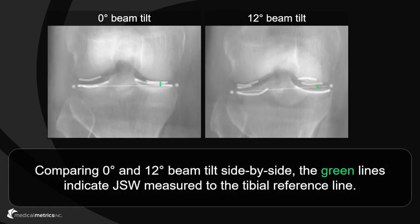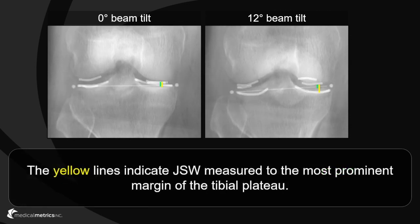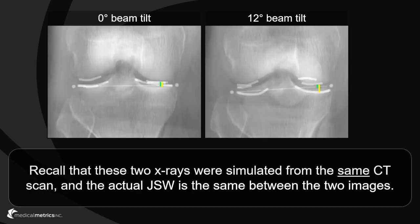Comparing radiographs at 0 degrees and 12 degrees of vertical beam tilt side by side, the green lines indicate joint space width measurements in the mid-coronal plane. The yellow lines indicate joint space width measured using the most prominent radiographic shadow of the tibial plateau. Note the differences in joint space width between the two methods for 0 degrees versus 12 degrees of vertical beam tilt. Recall that these two radiographs were simulated from the same CT exam, so the measured joint space width should be the same in both radiographs.